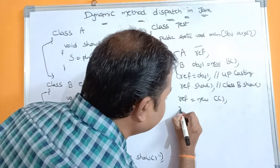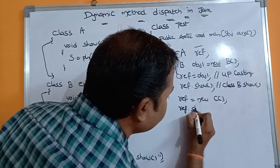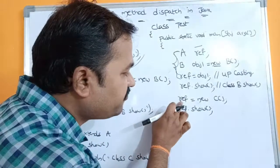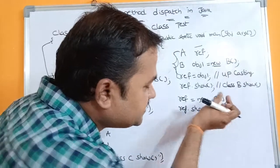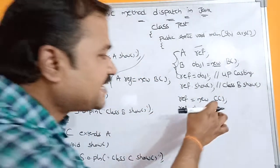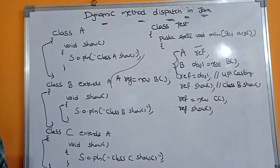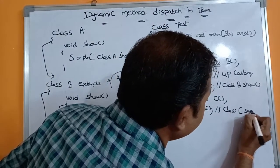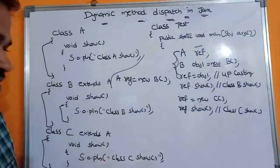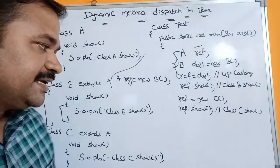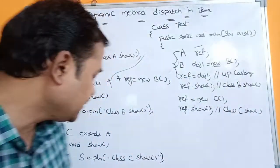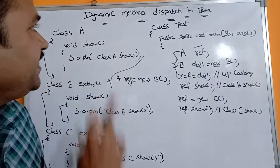Next, to call class C's show method, we write REF = new C() and then REF.show(). Now our REF contains a class C object, so the class C show method will be called and "Class C show" is printed. This decision about which show method is called is taken during runtime or execution time.